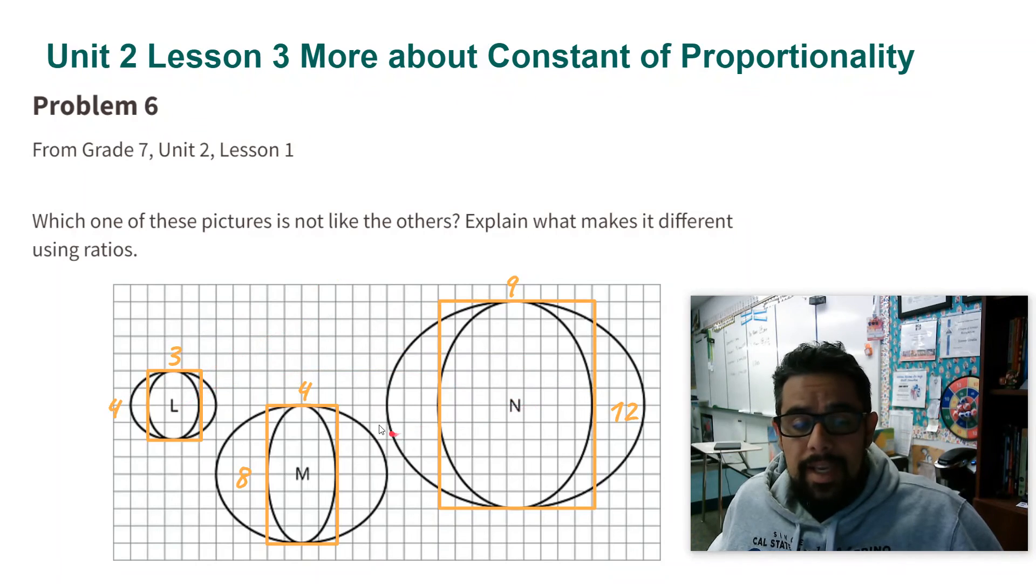So L and N match. M is the one that doesn't match, and that is because the ratio 8 to 4 is not the same as the other ratios. Thank you ladies and gentlemen.